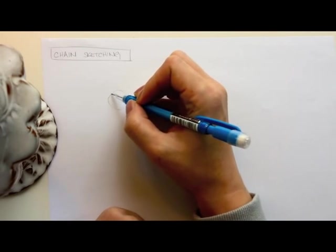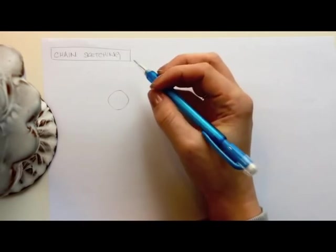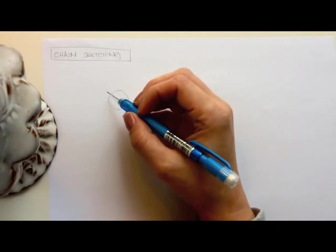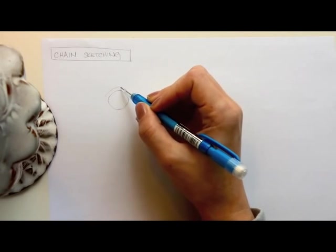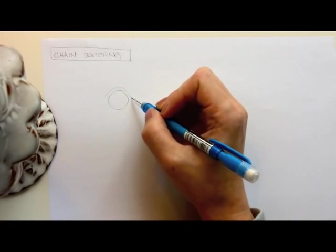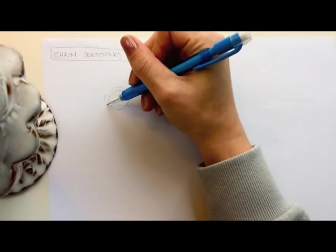So as you can see, it's a little bit pointy, so it's kind of a square circle. Okay, so then I'm going to make another circle just offset a little bit, a couple of millimeters apart from the original circle.